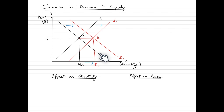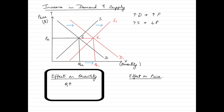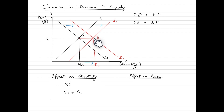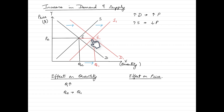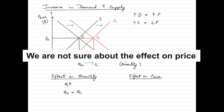An increase in demand pushes the price up, while an increase in supply pulls prices down. In this diagram, quantity has clearly gone up from Qe to Q1. But looking at price, it is more or less unchanged — because the upward pressure from increased demand and the downward pressure from increased supply offset each other. This is the new equilibrium, and we generally write the effect on price as indeterminate.